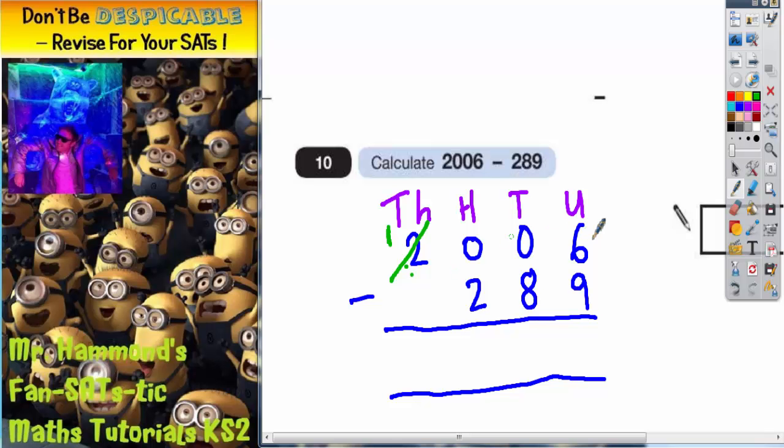We've got to do it column by column, so the one we borrowed from the thousands has got to go to the hundreds, and that now makes ten. Now we can borrow from the ten.